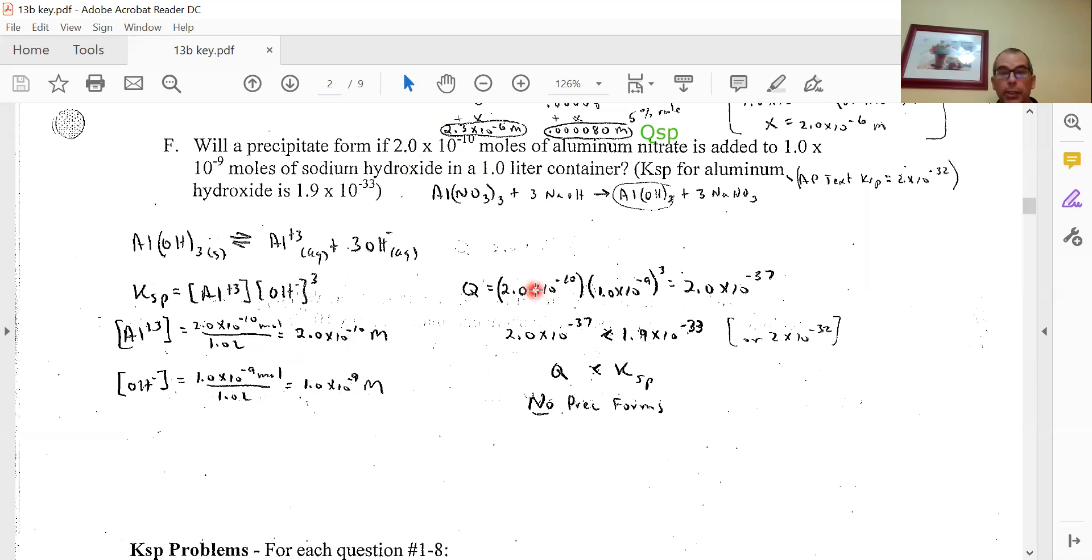Plugging into the Ksp expression, I didn't triple it, but I still have to cube it. So Q equals 2×10^-10 times (1×10^-9)^3, which equals 2×10^-37.